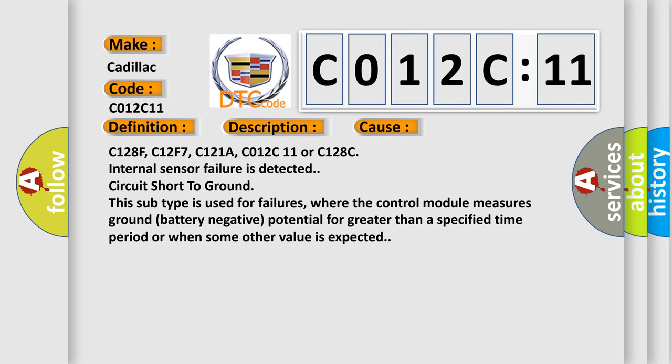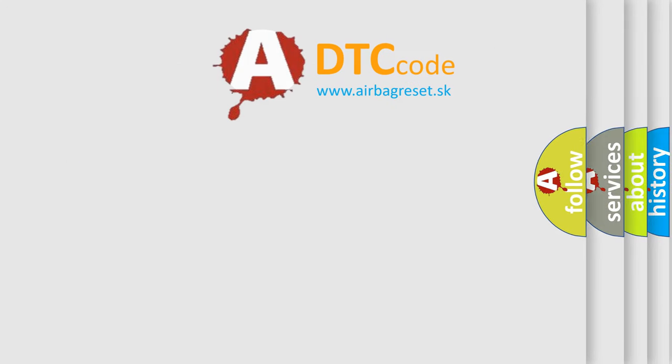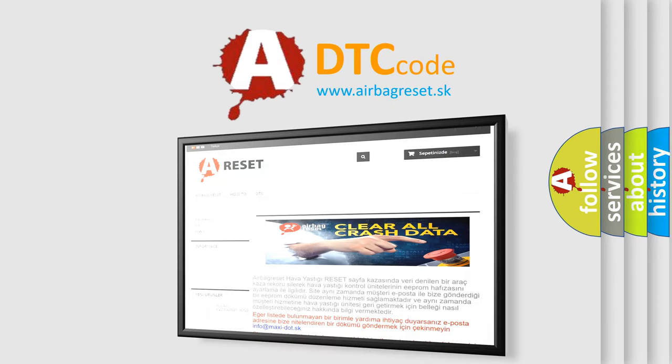Circuit short to ground. This subtype is used for failures where the control module measures ground battery negative potential for greater than a specified time period or when some other value is expected. The airbag reset website aims to provide information in 52 languages.